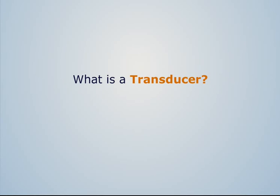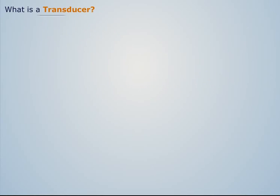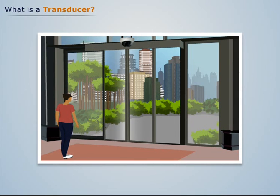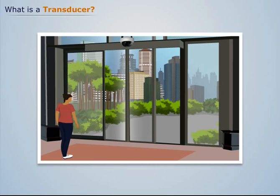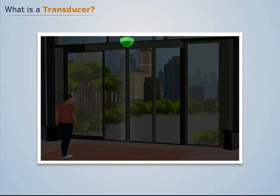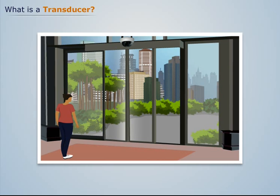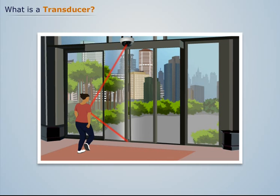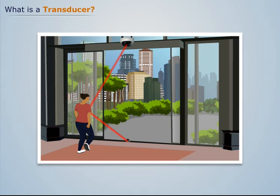What is a transducer? At airports and some restaurants we see automatic doors which open automatically as we proceed towards them. Have you ever thought how such doors operate? Such doors consist of an infrared ray emitter which radiates invisible rays. The emitted infrared rays are reflected by a person proceeding towards the door.